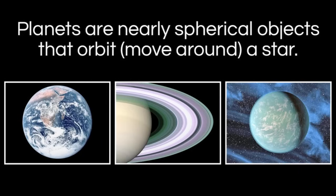Kepler-22b represents a new field in astronomy known as the search for exoplanets — planets that are not in our solar system, that are very distant, moving around other stars. We're particularly interested in Kepler-22b because it has a lot in common with the Earth, and we think it might actually have liquid water on the surface. If you're searching for life, we generally look for liquid water, because it's so important to the life that exists on our planet.